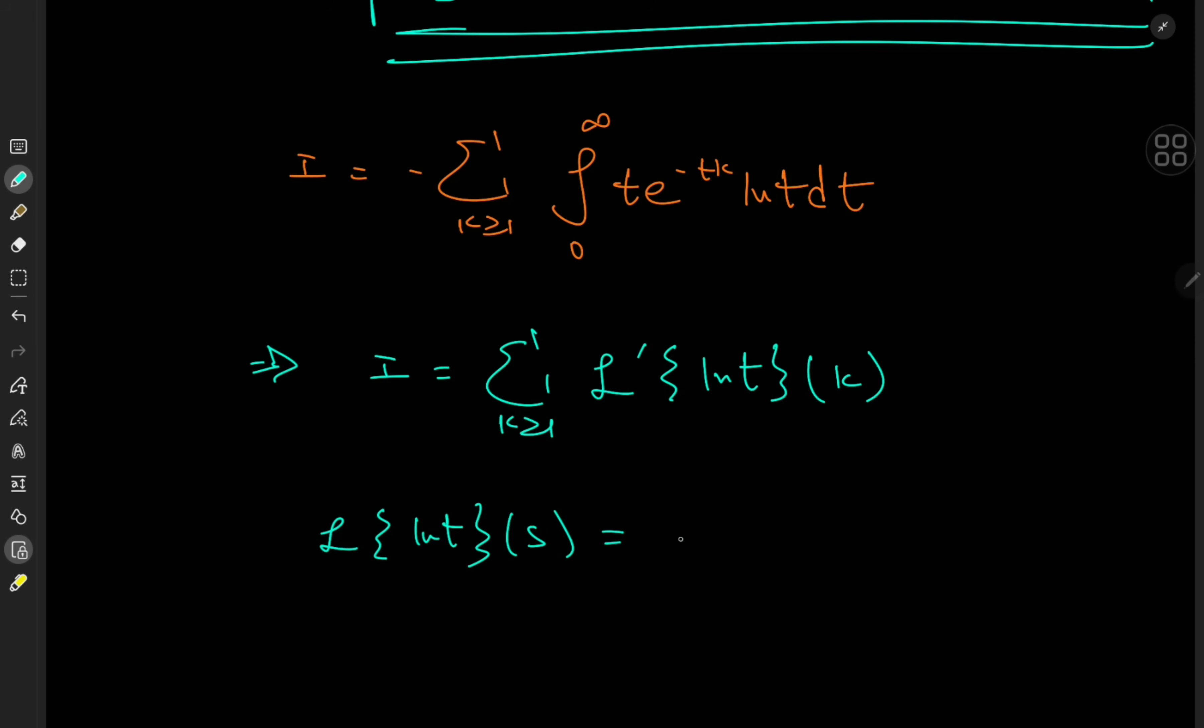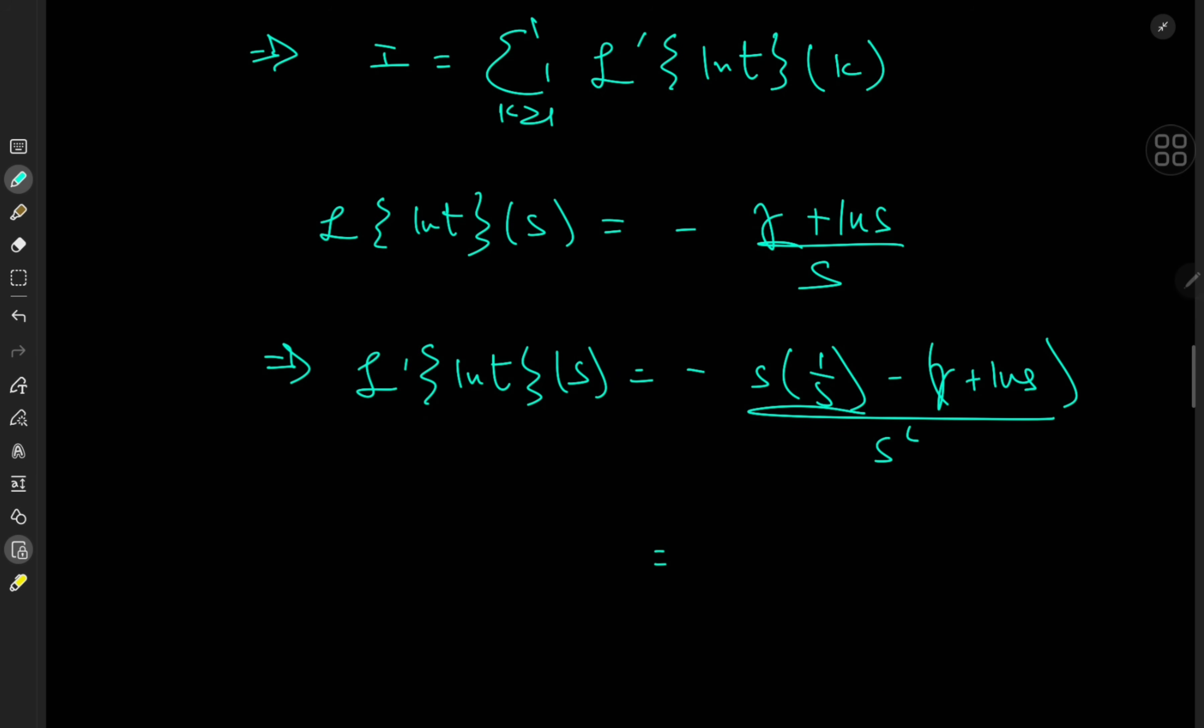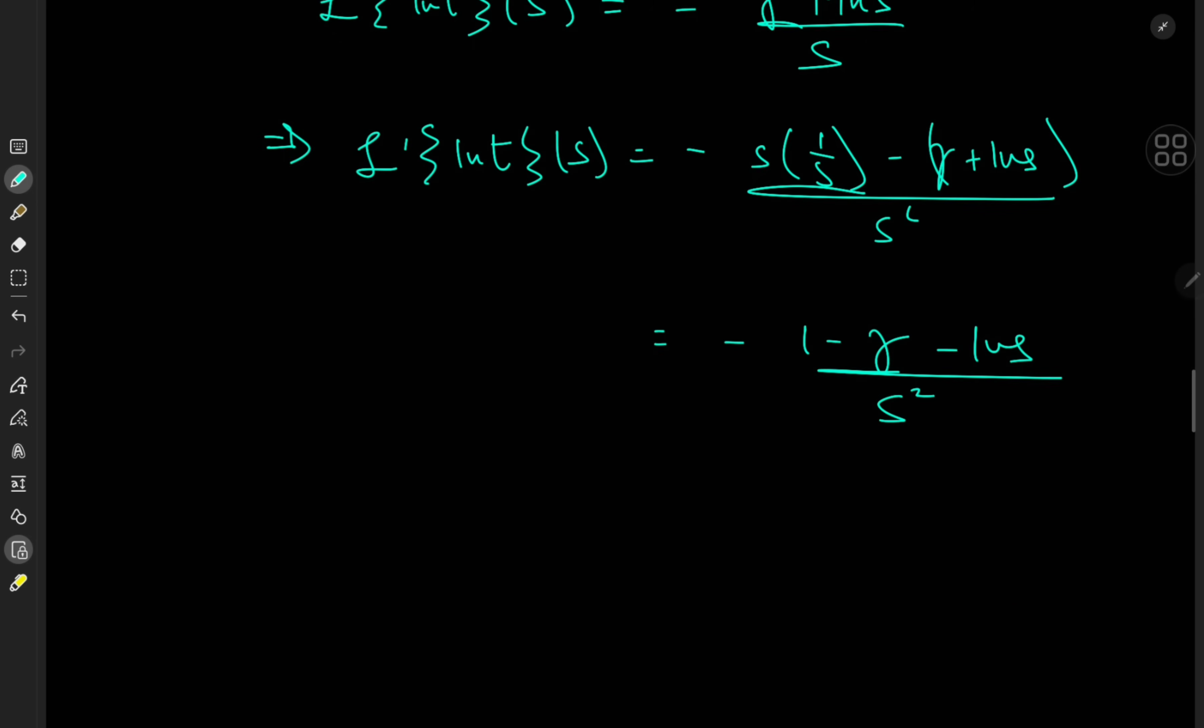This thing is just negative Euler-Mascheroni plus log s over s. So all I need to do is differentiate this thing. So negative sign is still outside, and I have s times 1 over s minus gamma plus log s times a 1 over s squared. That looks good. So we have negative 1 minus Euler-Mascheroni minus log s all over s squared, or I could just expand with a negative sign and write this as Euler-Mascheroni minus 1 plus log s over s squared.